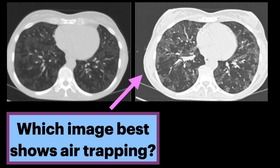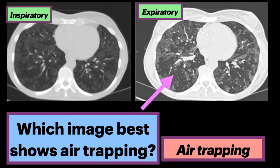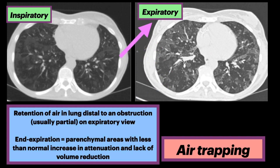Which image best shows air trapping? The right-hand image shows the expiratory view; the left-hand image shows inspiratory. On the expiratory view, we see absence of increased attenuation and lack of volume reduction in certain parenchymal areas of the lung. Thus, the answer is expiratory.